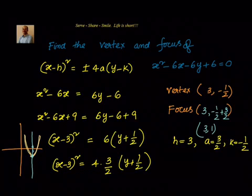So once we are able to do that we can easily find out by comparing (x-h)² to (x-3)² that h = 3. Similarly 4a = 4(3/2) that means a = 3/2. And y-k = y+1/2 that means k = -1/2. So we have h = 3, a = 3/2, k = -1/2.